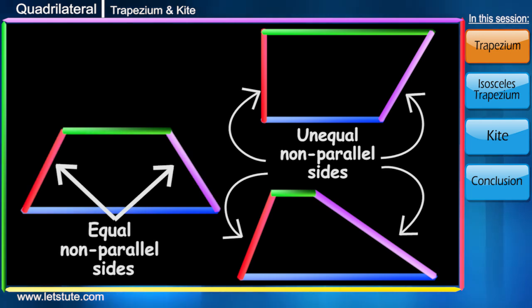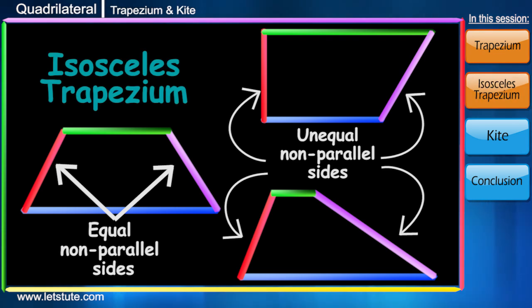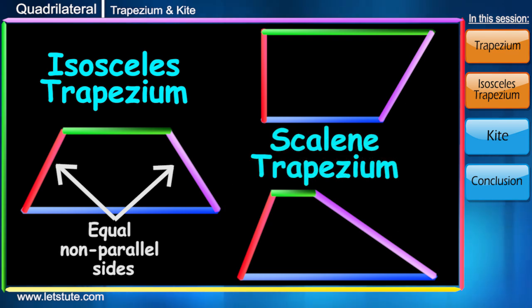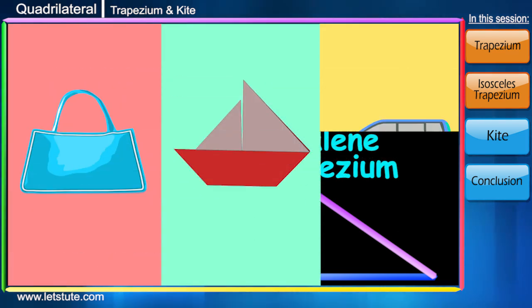Basically there are only two types of trapezium. When these sides are equal we call them isosceles trapezium. When they are not, they are simply called trapezium or we can say scalene trapezium. Here are some real life examples of trapezium.